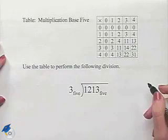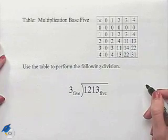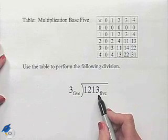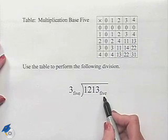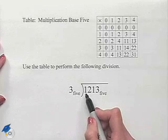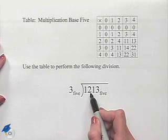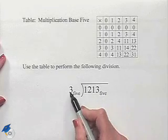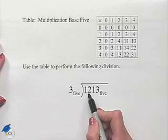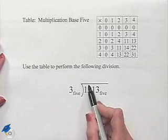Let's use that table to perform the following division. We have 3 base 5 divided into 1, 2, 1, 3 base 5. Well, as we would in base 10, we would note that 3 cannot divide into 1, so we would move over to our second digit and pick it up. 3 divided into 12, but be careful. This is not 3 divided into 12 base 10. We can't write down 4.